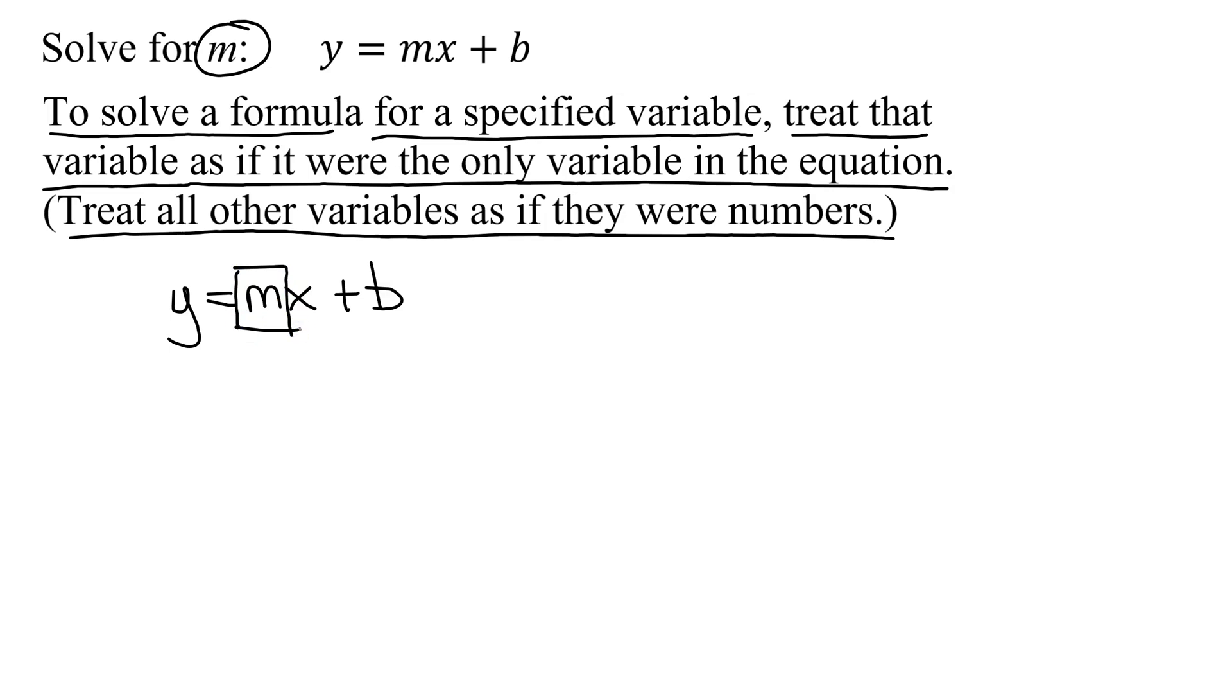If you get a bit overwhelmed by all these variables, pretend the y, the x, and the b are all numbers. So I'm just making up numbers. So 7 equals m times x. Let's pick x is 2. So that would be 2x plus b. I'm going to pick 19. How would you solve this problem?